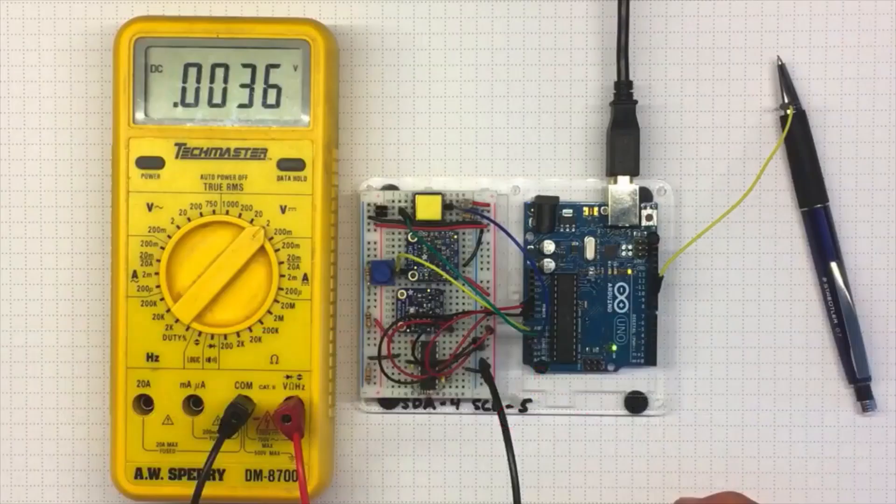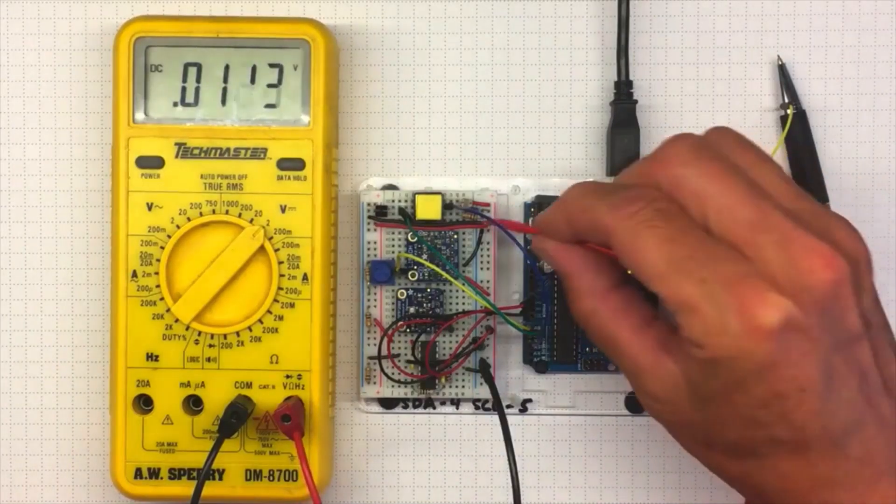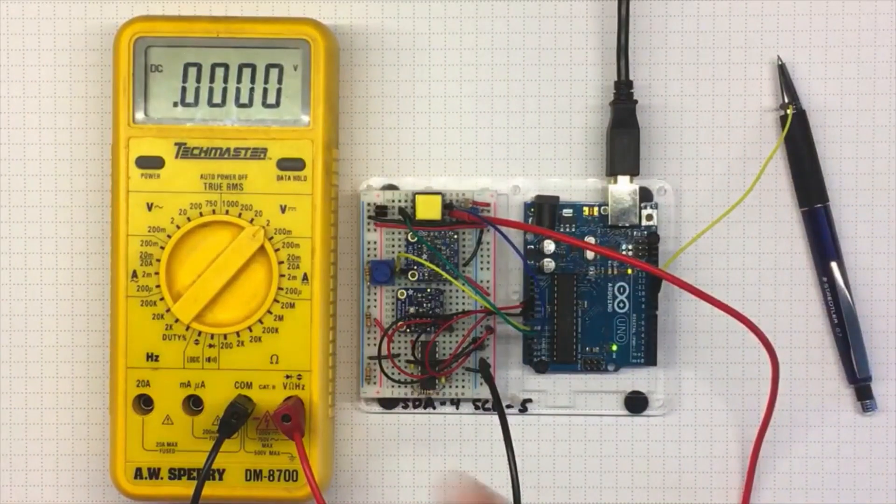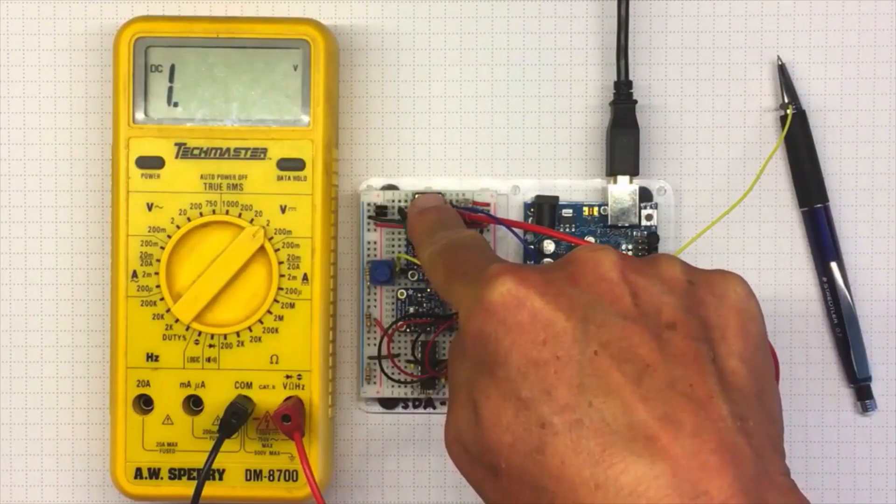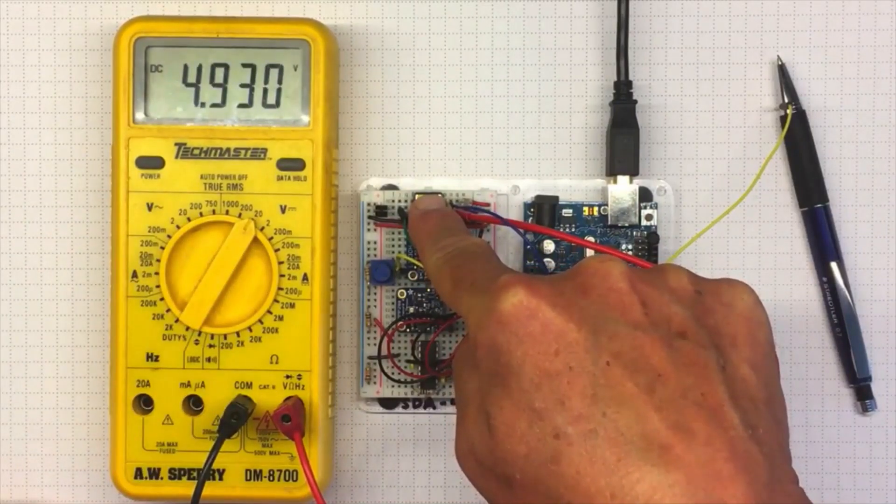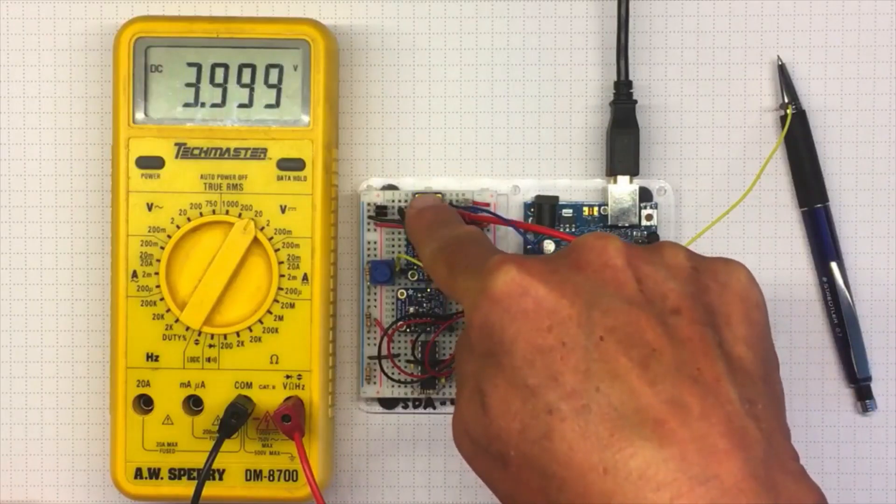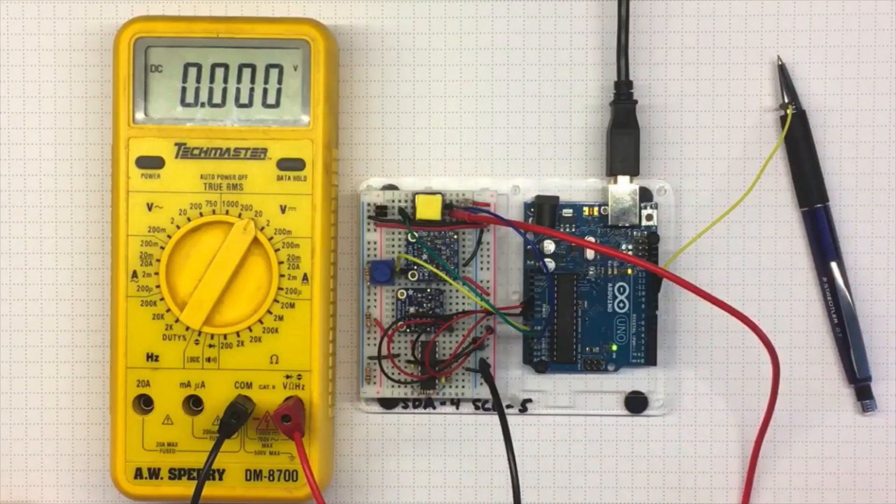Today we're going to discuss two different kinds of signals. Digital signals are only on or off, like we get from this push button. If I plug in, it's showing zero volts. When I push the button and change range, I'm getting 5 volts, back to zero, up to five. Those are my only two choices with a digital signal - on or off.